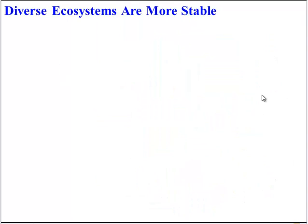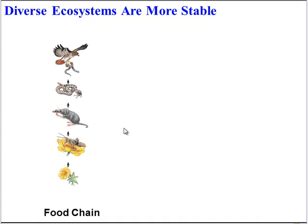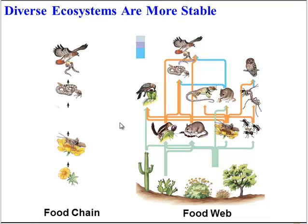This leads us to an important principle: the more diverse the ecosystem, generally the more stable it is. If we look at a simple food chain, the ecosystem is not very diverse. If something terrible happens and all the mice are removed, the food chain is probably going to collapse — there is nothing to eat the insects, so the insects will overpopulate and eat up all the plants. Meanwhile, the snake has nothing to eat and will die out, and the hawk population will then die out too. However, if the ecosystem is complex and looks more like a food web, if that same mouse species disappears, the organisms have other food sources and there's less likely to be long-lasting harm to the ecosystem.